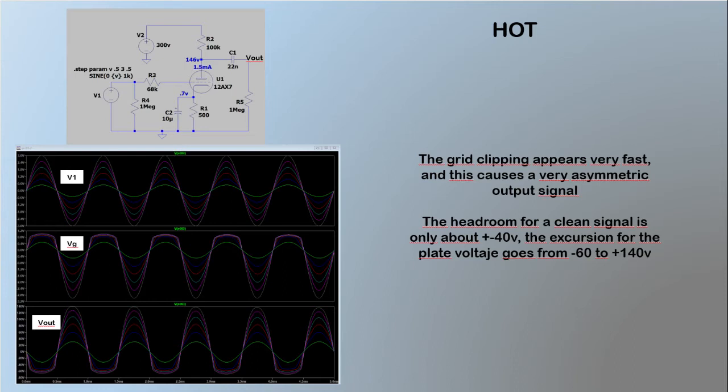In the SPICE simulation we see again the grid leaking current in VG, and the consequence is again the negative cycle of the plate voltage will be clipped. The response for the negative cycle of the grid voltage is a clean and nice wave. We have an asymmetric clipping.